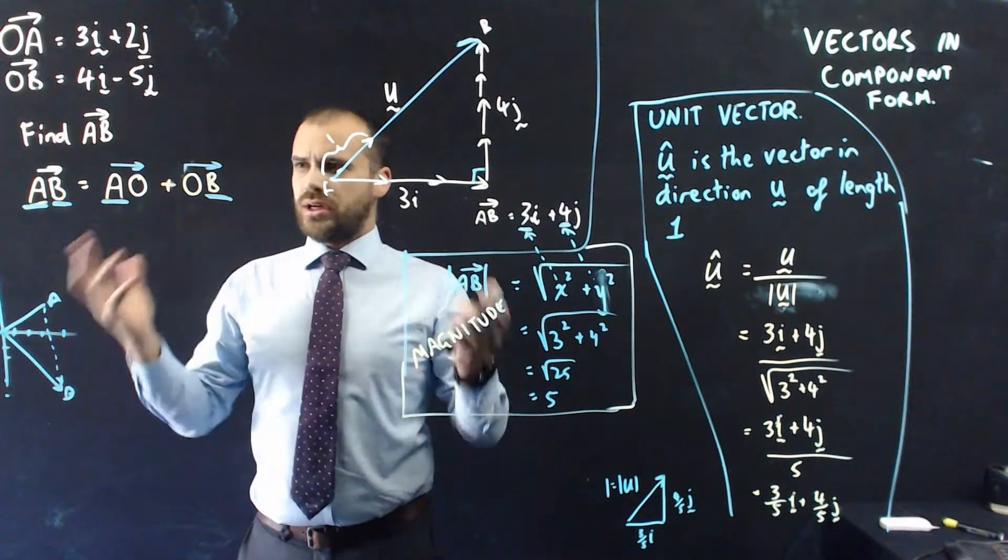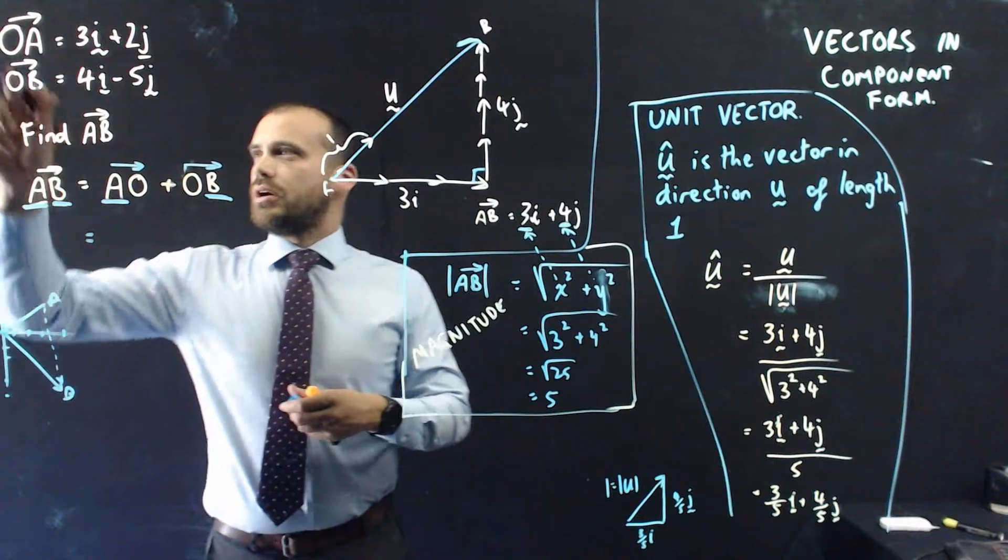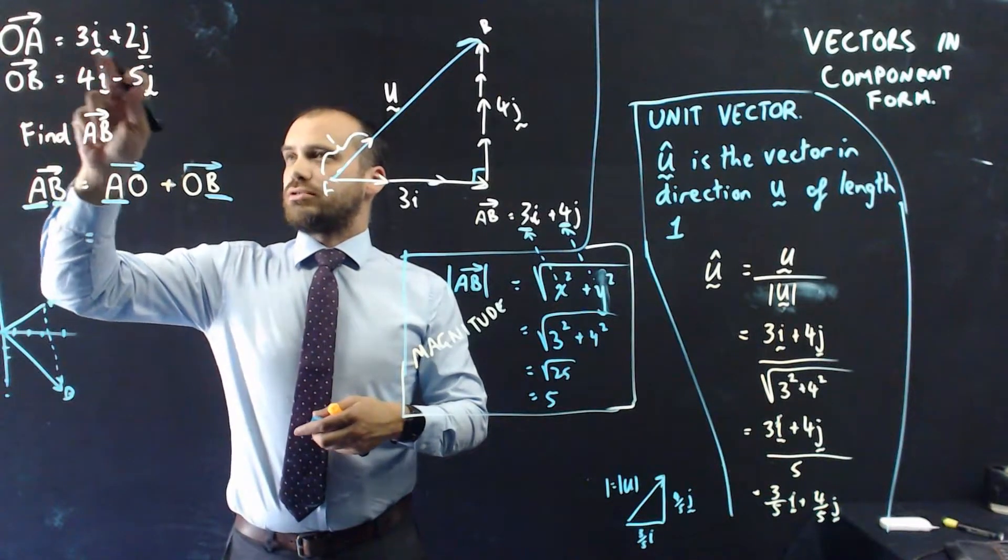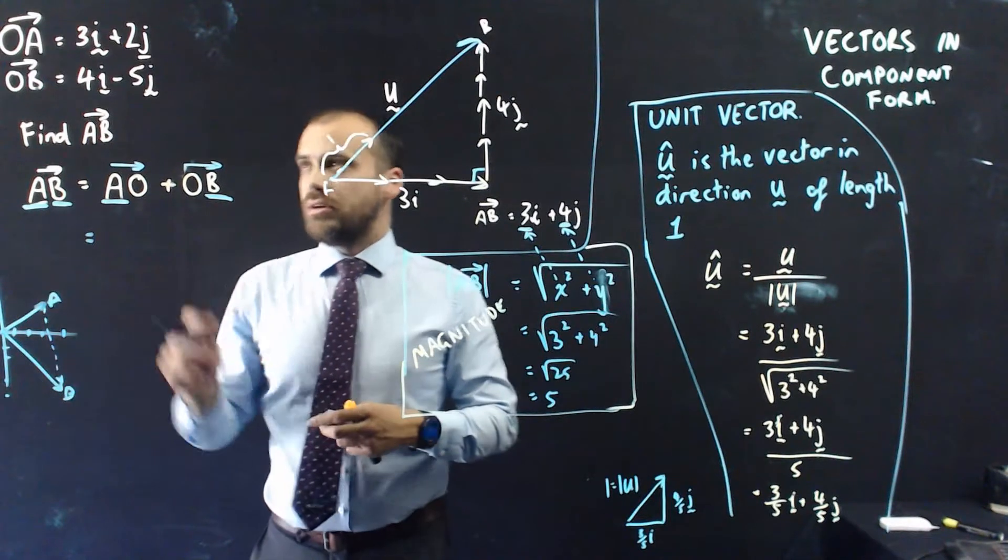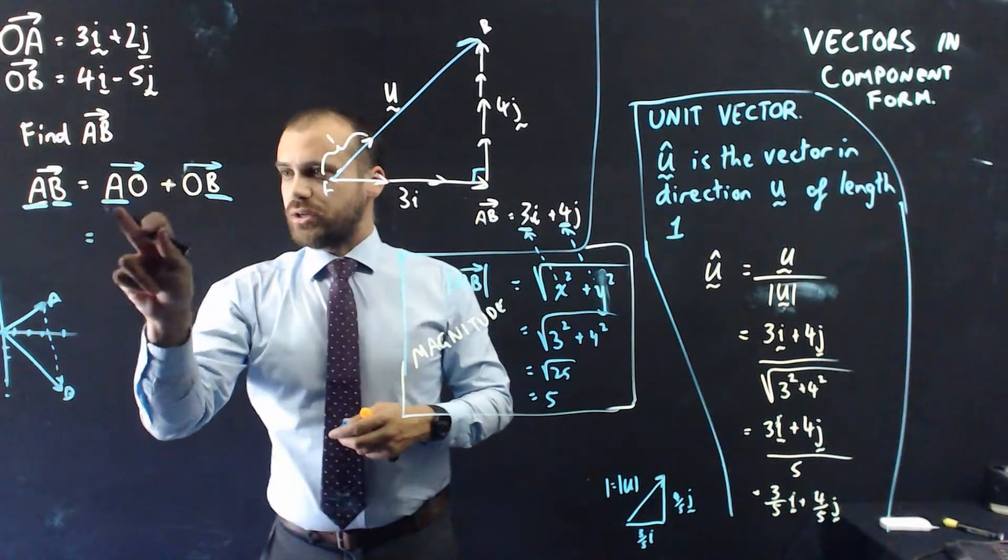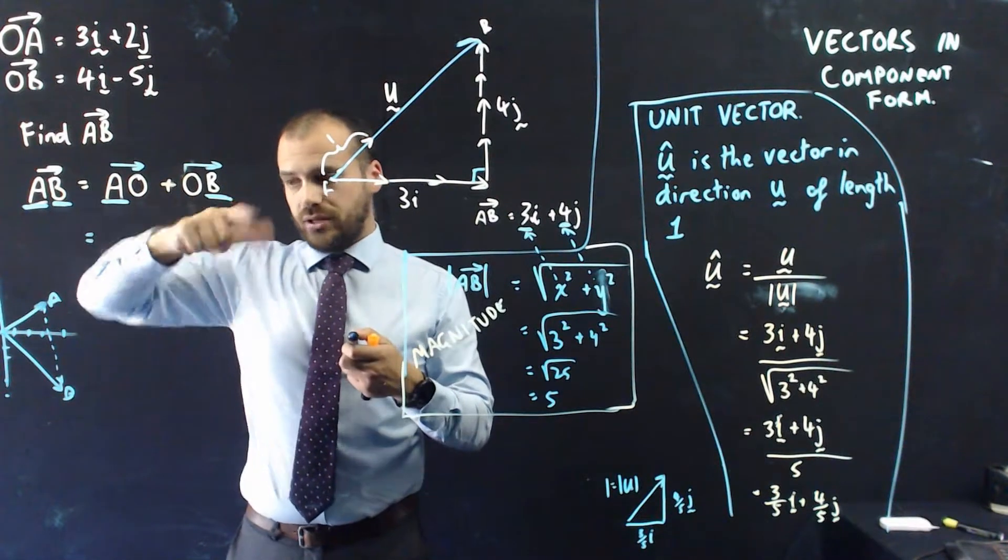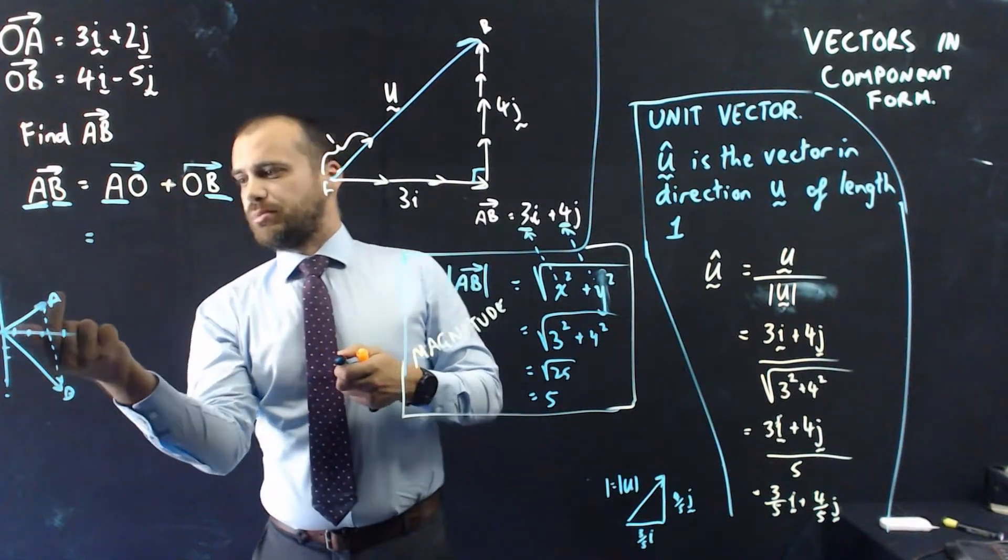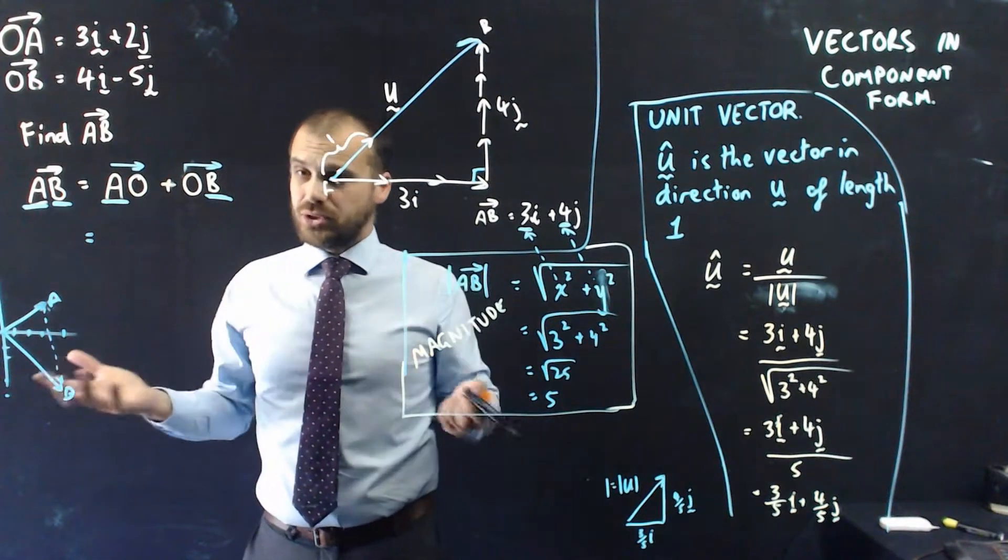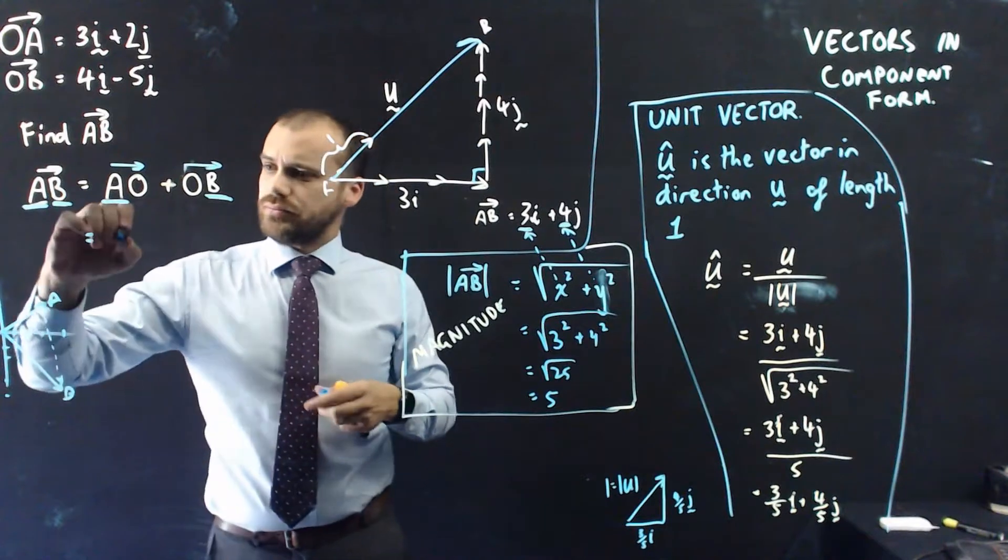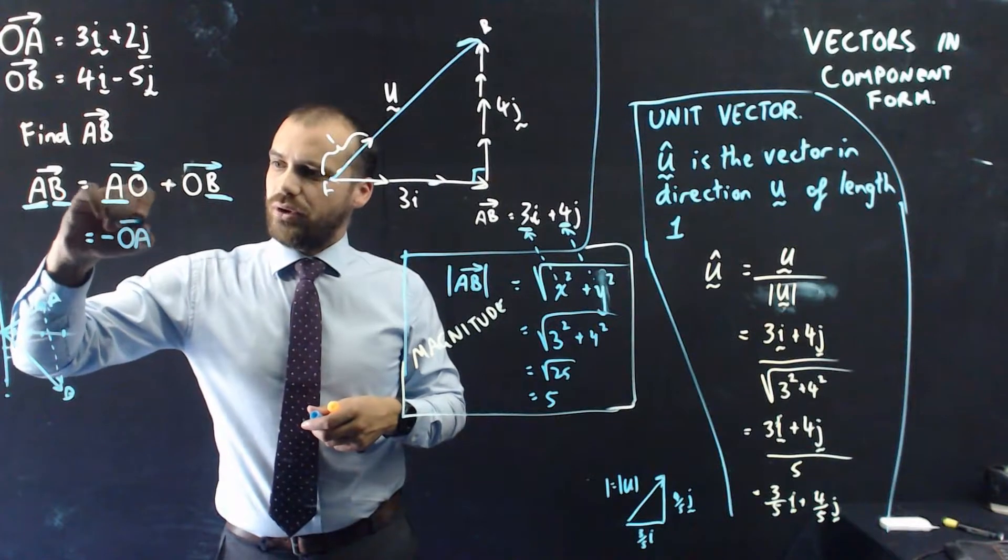So now we can say that vector AB is equal to AO plus OB. Now, why is that useful? Or what do I do with that now? Well, I know OA is 3I plus 2J. So that's OA in that direction. But I don't want OA. I want to go the other way. I want AO. Now, to flip a vector around, to take that vector and flip it around so that it's no longer OA, but it's AO, I just need to multiply it by negative 1.